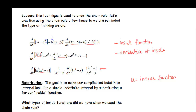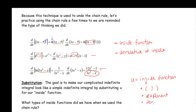Looking at our derivative examples, the inside function is what's inside those parentheses, so one option for u is what's inside the parentheses. For the second example, the inside function is what's in the exponent. And for the natural log one, the inside function is in the denominator. So there are three different options: it could be the stuff inside the parentheses, what's inside the exponent, or what's inside the denominator.